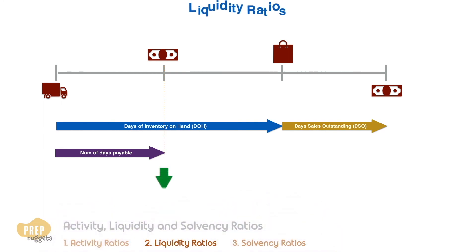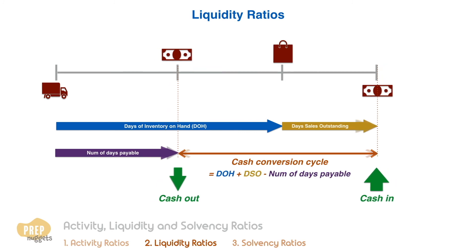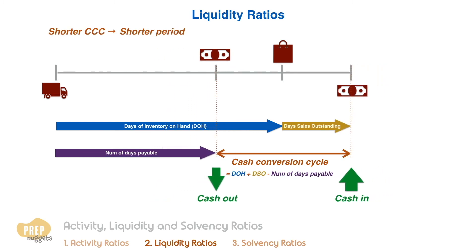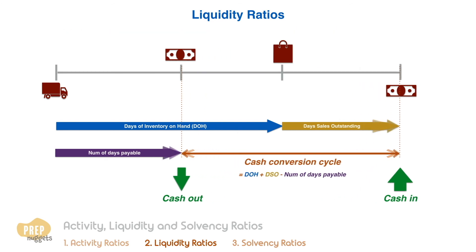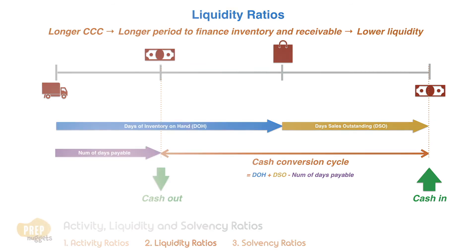The time between the outlay of cash and the collection of cash is called the cash conversion cycle. A short cash conversion cycle implies that the company only needs to finance its inventory and accounts receivable for a short period of time. A long cash conversion cycle indicates lower liquidity — it implies that the company must finance its inventory and accounts receivable for a longer period of time, possibly indicating the need for a higher level of capital to fund the current assets.